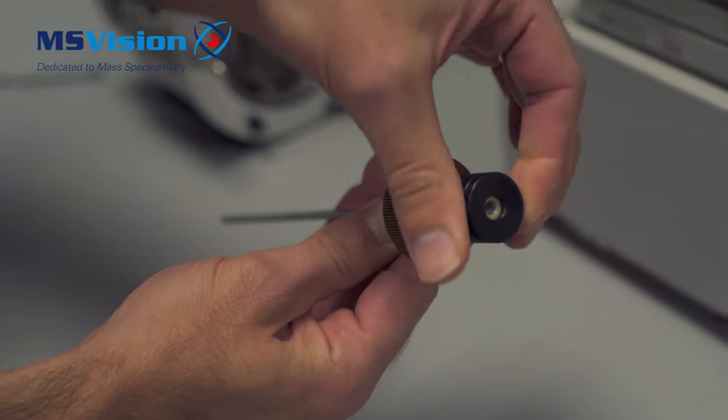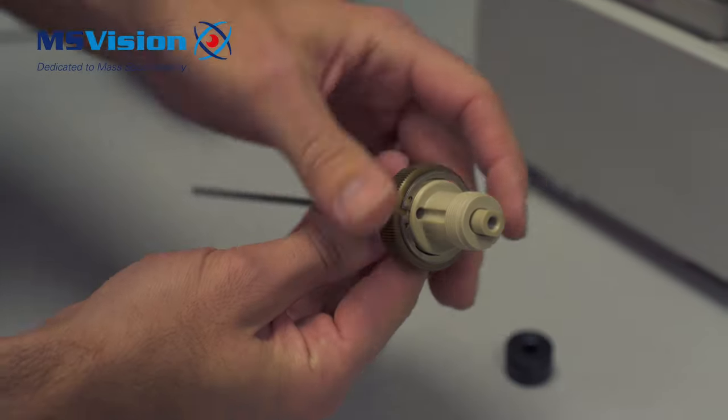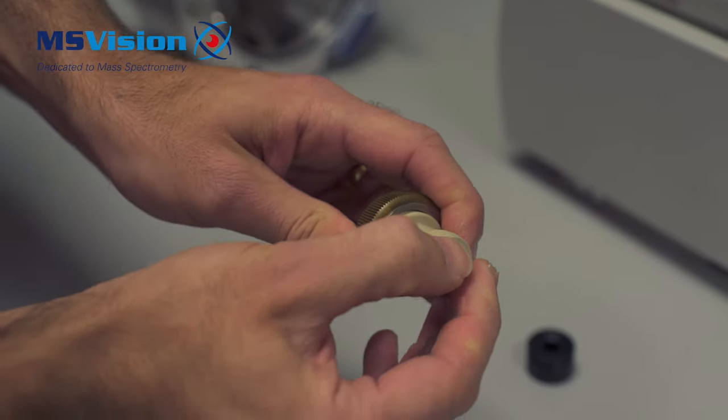Remove the black locking nut and pull out the capillary holder. Please note that there is a spring under the holder, so make sure this is removed as it can fall out.